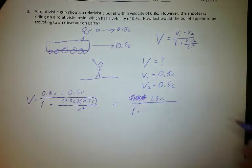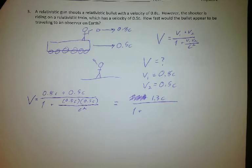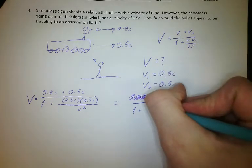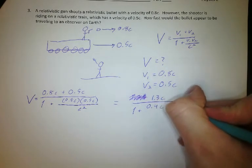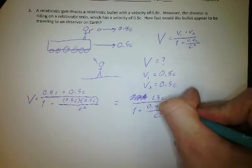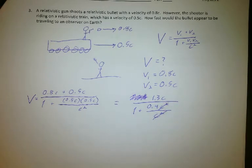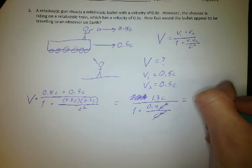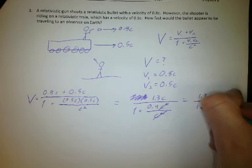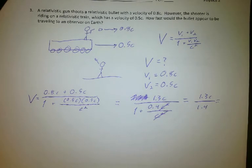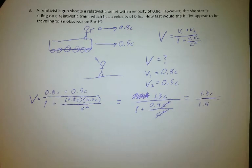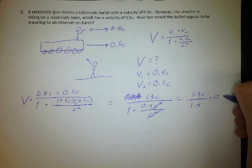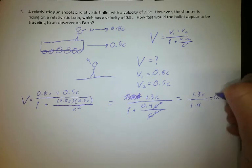Then we do 1 plus — and now we multiply 0.8c and 0.5c. So 0.8 times 0.5 is 0.4, and c times c is c squared, giving us 0.4c squared over c squared. Those c squareds cancel, giving us 1.3c over 1.4. Dividing 1.3 by 1.4 and leaving the c alone gives me 0.93c.